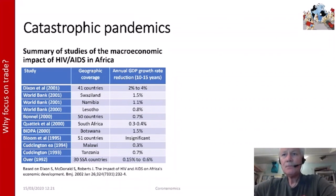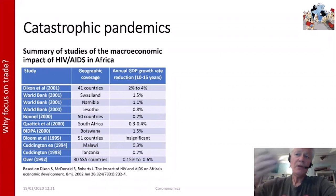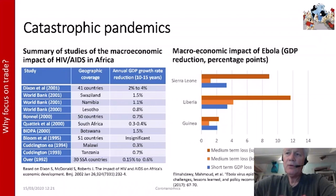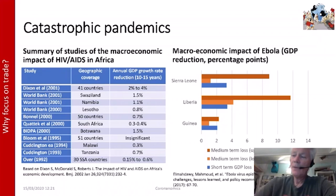What would catastrophic pandemics look like? The first example is HIV/AIDS in Africa, where there is a long-run impact — annual GDP over 10 to 15 years is subdued and growth potential is influenced over the longer term. Another example is Ebola, hitting Sierra Leone, Liberia, and Guinea. The long-run GDP estimates show a big dispersion, coming up to almost 12% for Liberia. That is catastrophic — different from what is happening in the Netherlands.